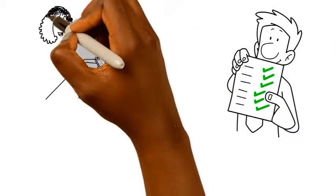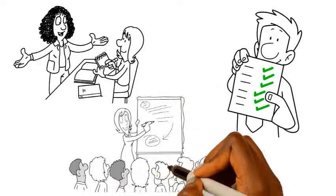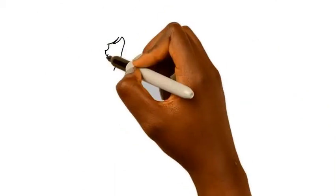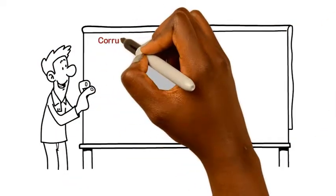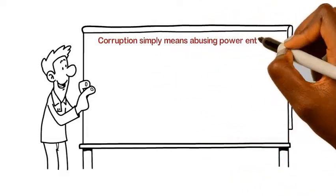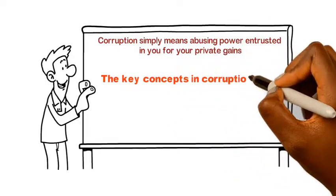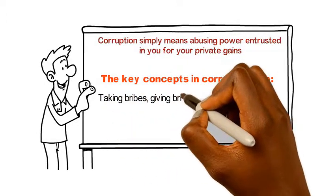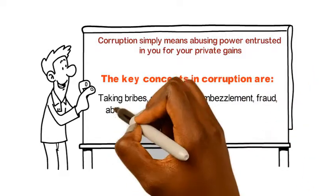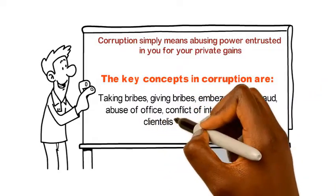I will be giving you an assignment to refresh your understanding of the concept of corruption. But first, let's summarize what we have learned today. Corruption simply means abusing power entrusted in you for your private gains. The key concepts in corruption are: taking bribes, giving bribes, embezzlement, fraud, abuse of office, conflicts of interests, lobbying, clientelism and nepotism.